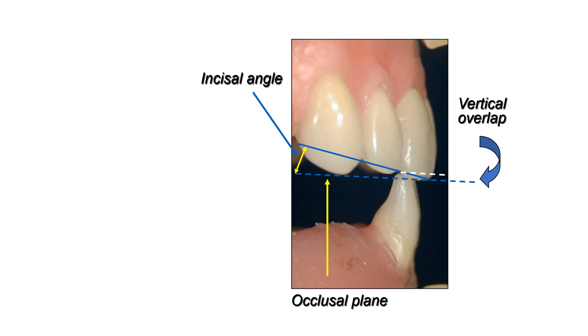As we can see, this is the horizontal plane, and this is the vertical overlap shown here in the diagram.